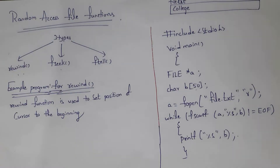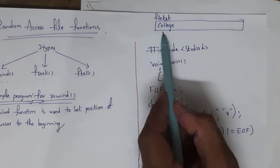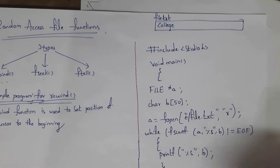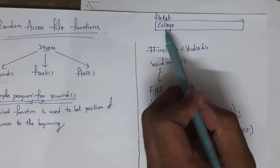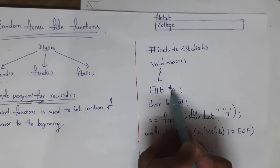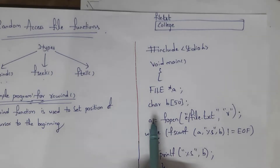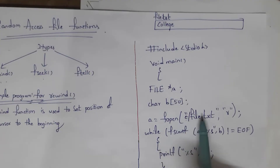First I will explain the rewind function with an example program. By using the rewind function you can bring the cursor to the beginning — that is, you can place the cursor to the starting position. My file name is file.txt and it contains the text 'college'. I will write a program to display this text on the output screen. I declared a file pointer variable named 'a', then written a = fopen of file.txt.